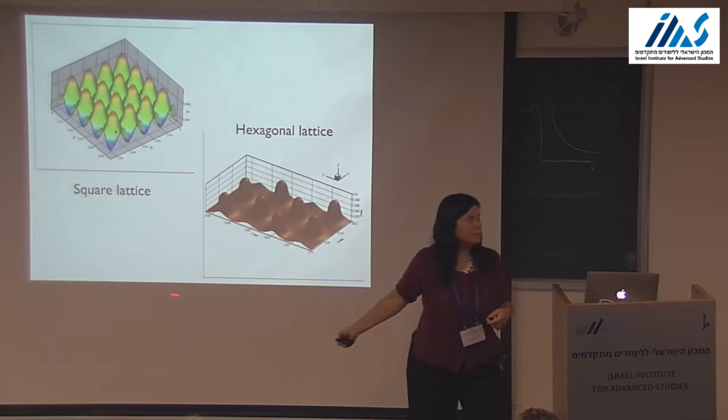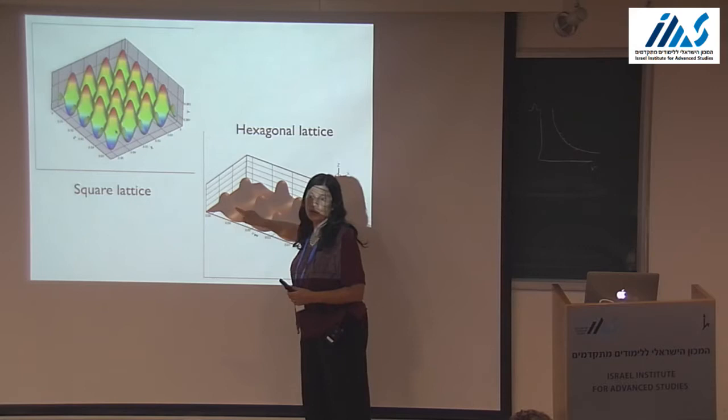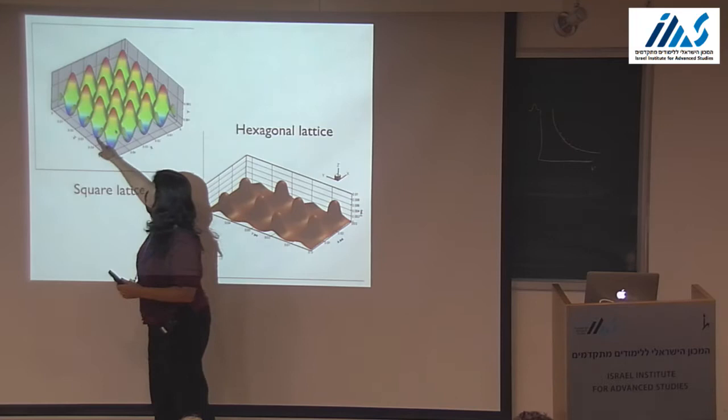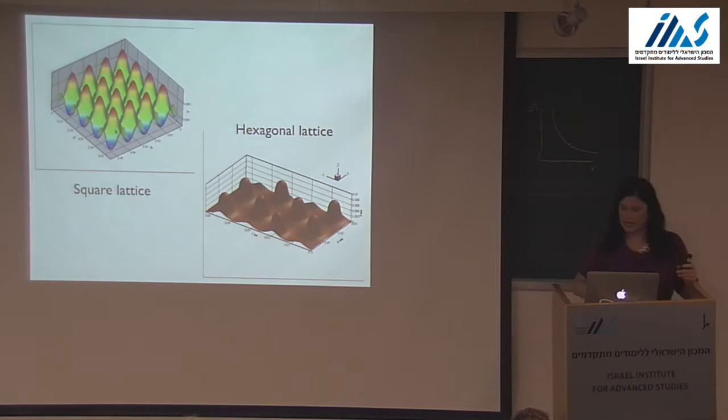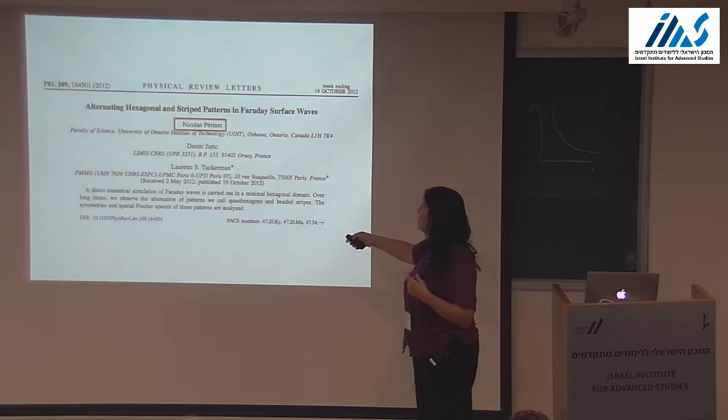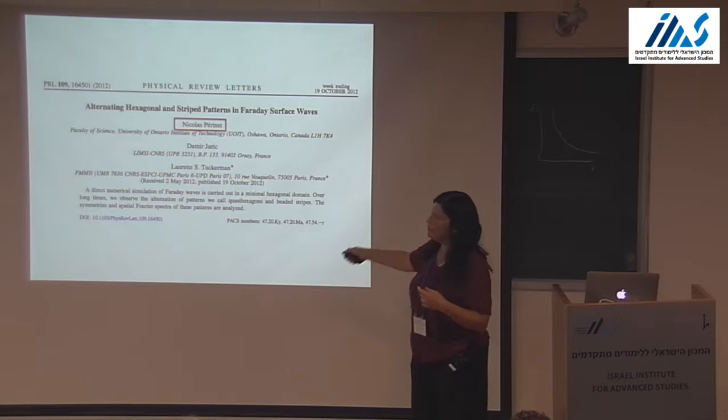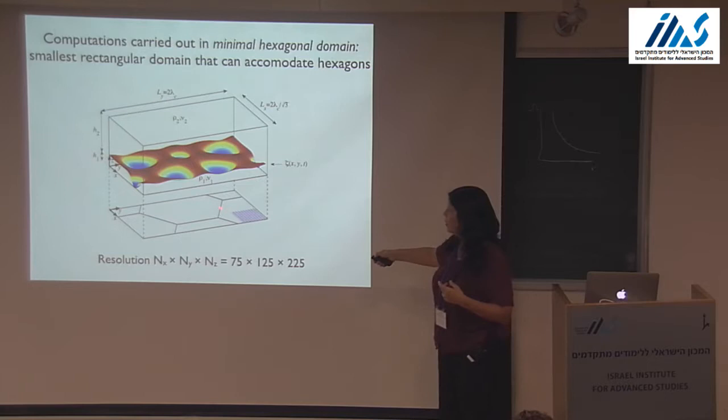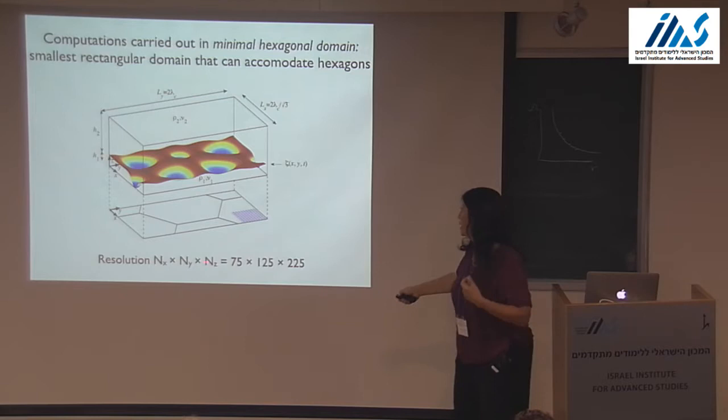This is a little misleading — to make everything prettier, this is really only a computation in a single domain just repeated periodically for visualization. This is only a computation in a single square, repeated for visualization. What I'm going to tell you now is about a single hexagonal cell, something that Nicolas Périné discovered. This is the minimal cell for observing a hexagonal pattern.